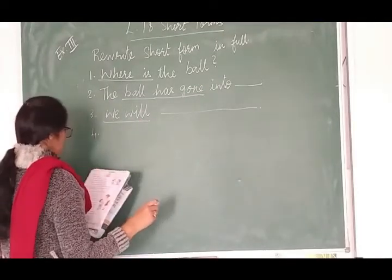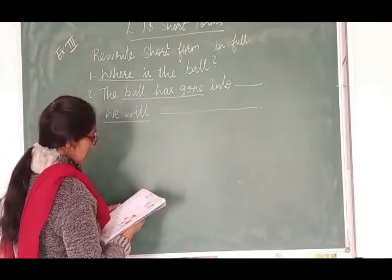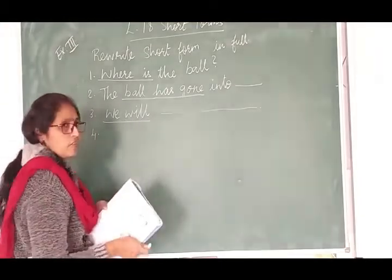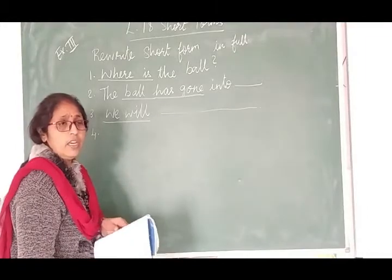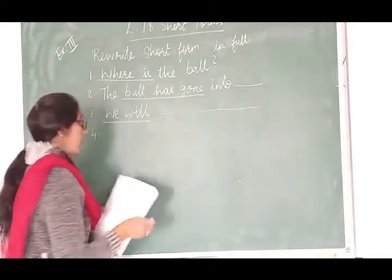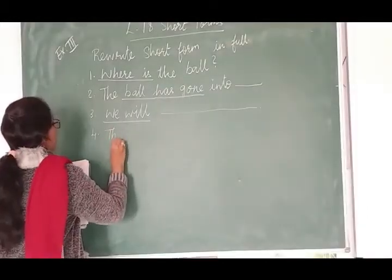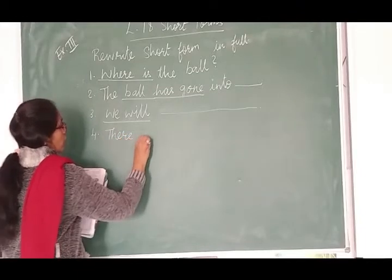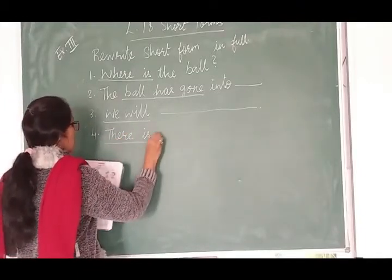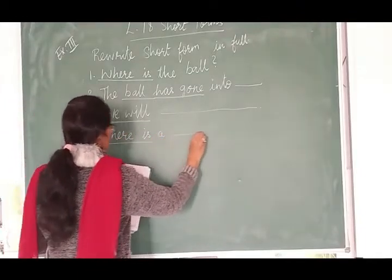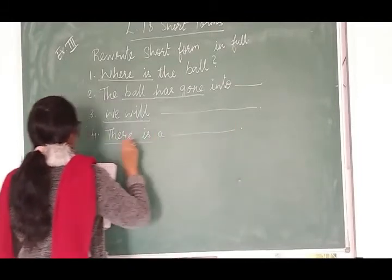Then, fourth one. There, apostrophe s, a big stick in the shed. Toh, apostrophe s, baad mein pe koi verb nahi hai. So, that is, there is. Kya hai ye? There. Or, apostrophe s ka kya hota hai? Is. A big stick in the shed.